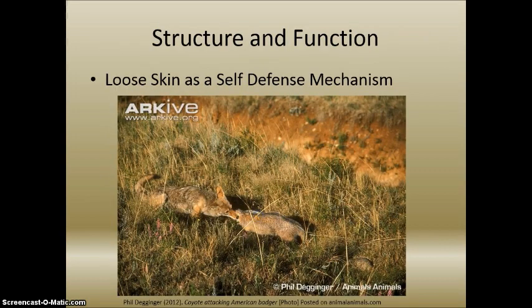Here in this picture is a coyote caught near the neck of an American badger. The American badger has actually pulled itself back, and you can see most of that loose skin right there near the coyote's mouth.